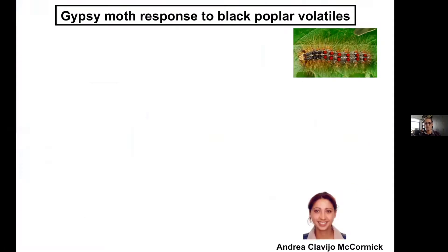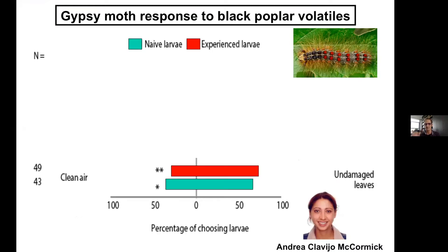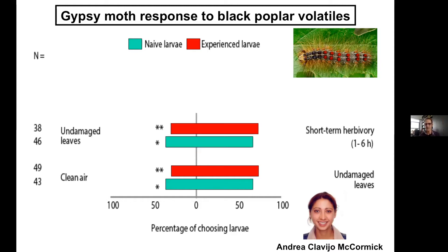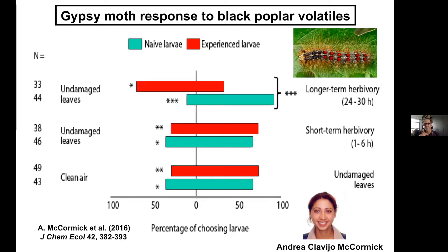After long-term herbivory, larvae that had never fed on poplar still preferred the herbivory-damaged foliage, but those with experience of at least one feeding bout would then leave and go to undamaged leaves — showing clear acceptance and rejection. Andrea then broke down the volatile blend and tested individual compounds using a four-way olfactometer: an arena with airstreams from different directions, where she placed the caterpillar in the middle and photographed it to produce a heat map showing where caterpillars preferred to spend time.